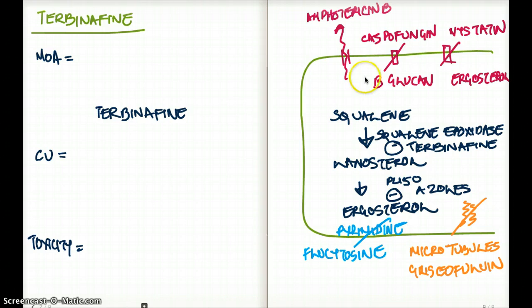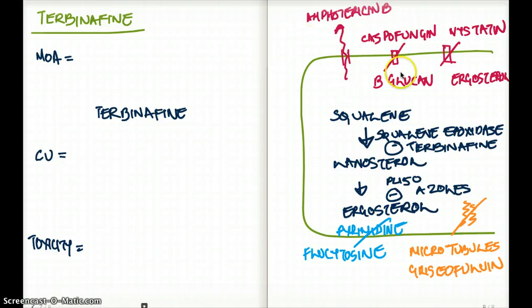The first one is going to be amphotericin B. Amphotericin B makes holes in the cell membrane, which allows electrolytes to leak out of the cell, causing disruption of the cell membrane and damage to the fungus. So that's mechanism number one.